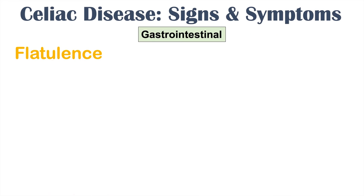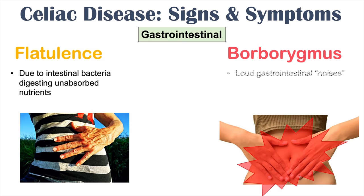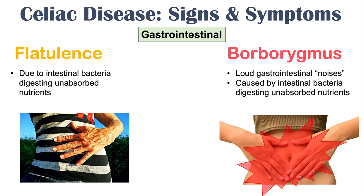Flatulence is caused by intestinal bacteria digesting unabsorbed nutrients that end up in the large intestine, producing gas. A related sign is borborygmus — loud gastrointestinal noises, gurgling sounds from the stomach — also caused by intestinal bacteria digesting unabsorbed nutrients, producing gas that travels through the gastrointestinal system.